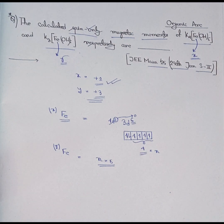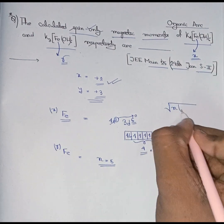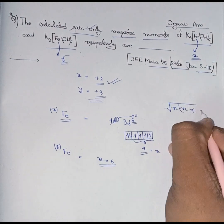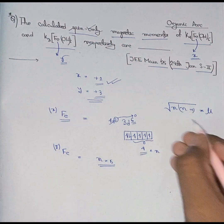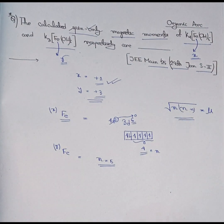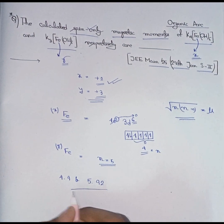And the formula to calculate the spin-only magnetic moment is √[n(n+1)], which is denoted as μ. So after putting the values 4 and 5, we respectively get 4.9 and 5.92.